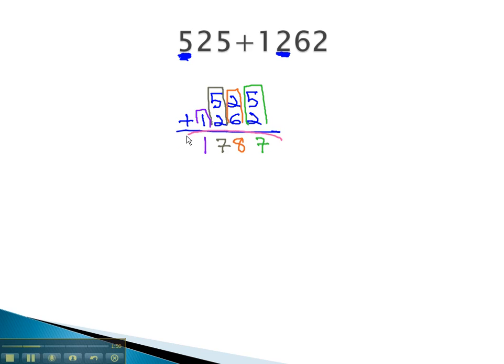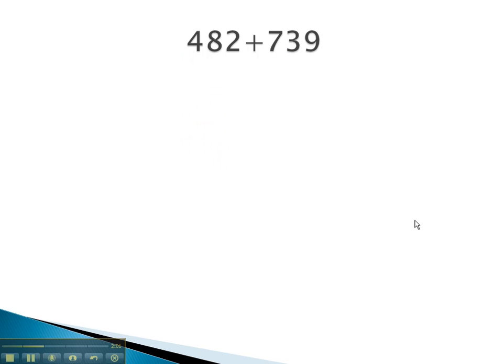This colorful result, 1787, becomes our solution. Let's take a look at one more example that we'll add together. Here, we're adding 482 plus 739.